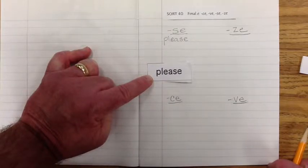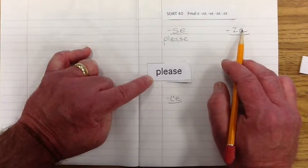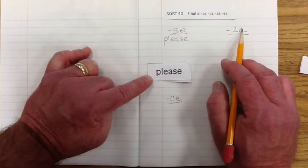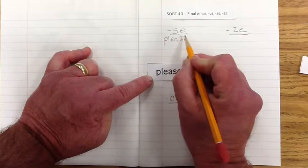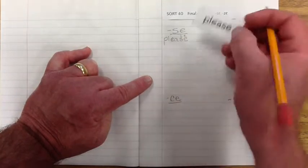Please. Say that with me. Please. Is that S or is it Z? Please. That makes the Z-E sound, doesn't it? Interesting. So, that one kind of makes a Z-E sound. And the E is what? Silent. That's right.